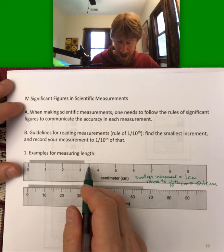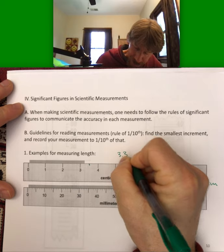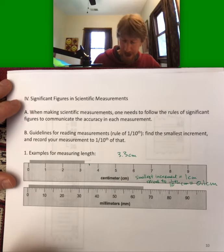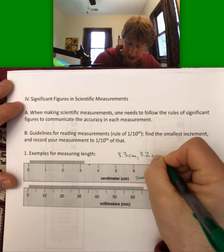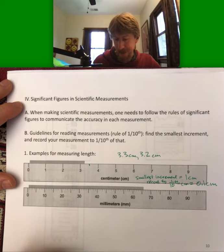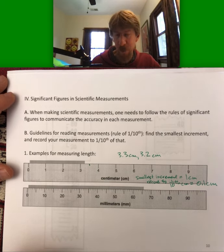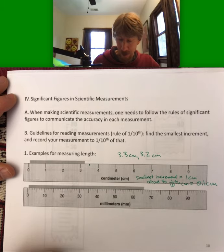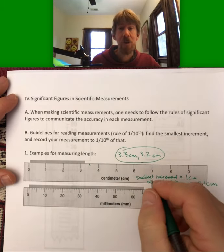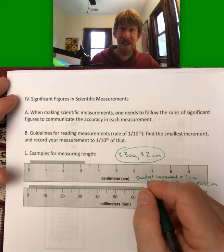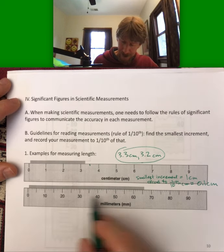In fact, if I draw that line, I might say 3.3 centimeters. I could say probably 3.2 centimeters. I don't think you can get away with 3.1, and I don't think you can get away with 3.4. So either of these values could be correct because there's some uncertainty in that tenth place.